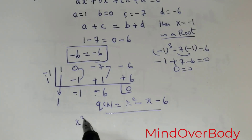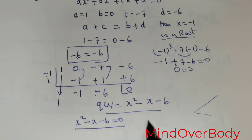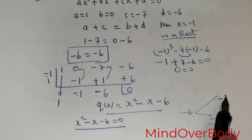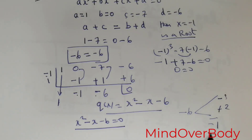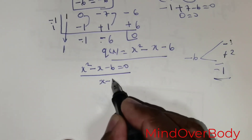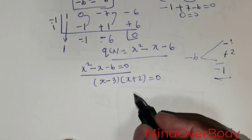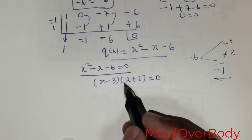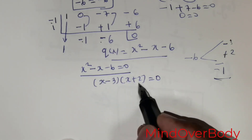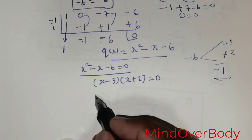This is easily solvable. x squared minus x minus 6 equals 0. To factorize, we need two numbers that multiply to negative 6 and add to negative 1: that is negative 3 and positive 2. So rewriting: x minus 3 multiplied by x plus 2 equals 0. Expanding confirms x squared plus 2x minus 3x minus 6.